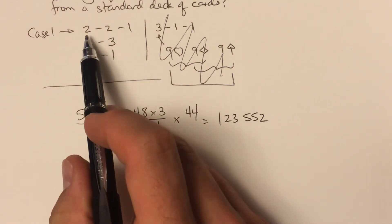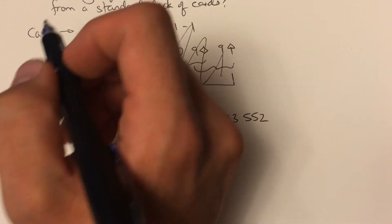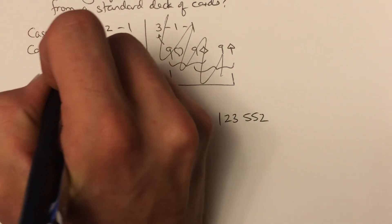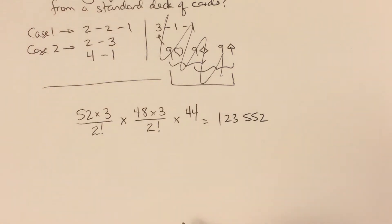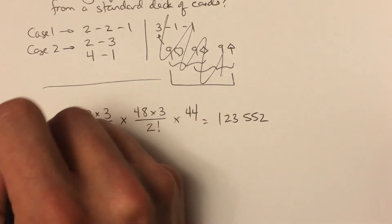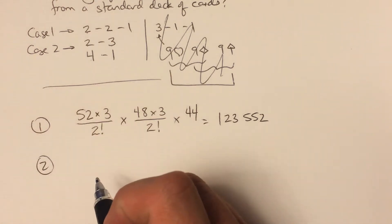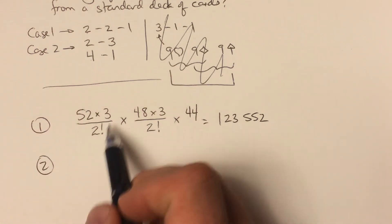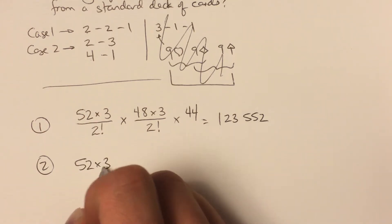Okay, so that's the case, this first case of 2-2-1: two of a pair, a different pair, and then a singleton. Let's look at case two, which we would call the full house case.